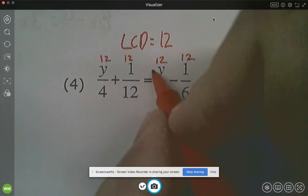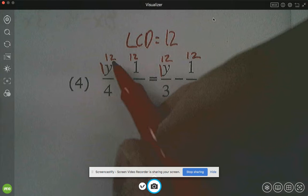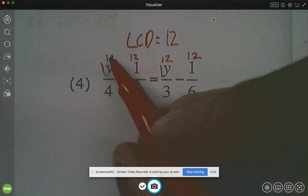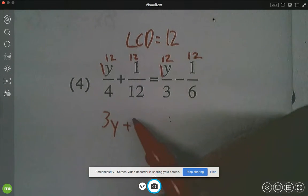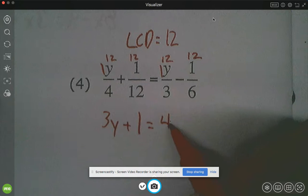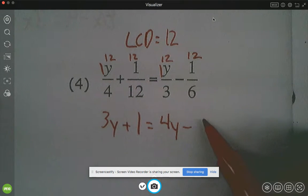If it helps, I'll put the assumed 1s here. So what would the left side clear to be? This would be 12 divided by 4, which is 3. So 3y plus 1 equals 12 divided by 3 is 4y minus 12 divided by 6 is 2.